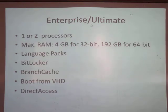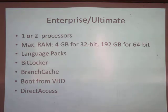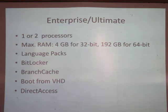Enterprise is essentially the same as Ultimate. You're always stuck with 4 GB on 32-bit hardware, but nobody should be buying 32-bit hardware except on portable devices. 64-bit gets a ridiculous amount of RAM. Key Enterprise/Ultimate features include language packs, BitLocker, and boot from VHD. You can take a virtual hard disk and boot from it, but only with Enterprise or Ultimate.